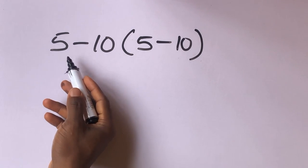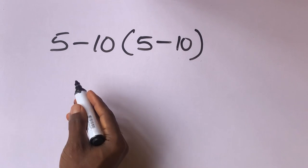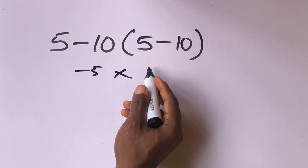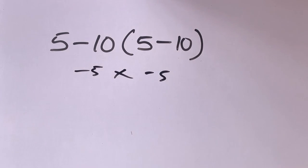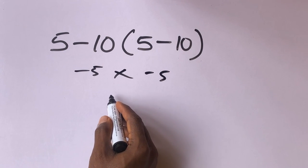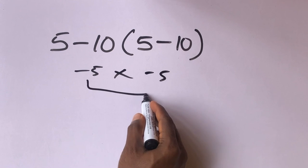Let's solve this problem. 5 minus 10 will give us minus 5 times 5 minus 10 will give us minus 5. Minus 5 times minus 5 will give us 25.